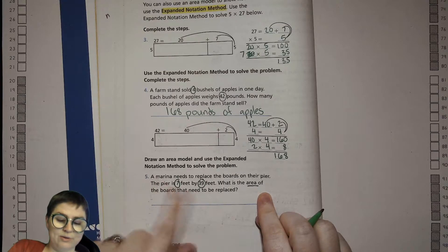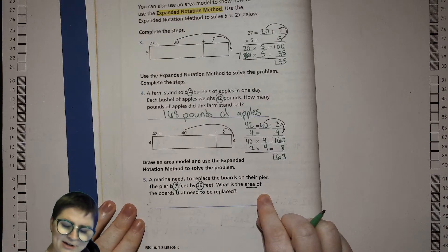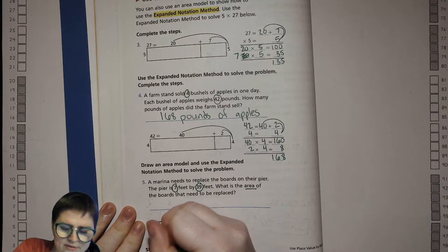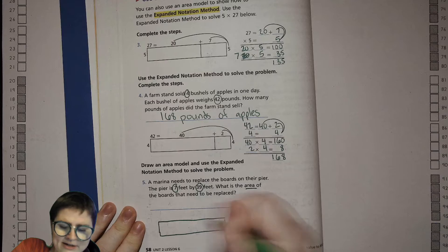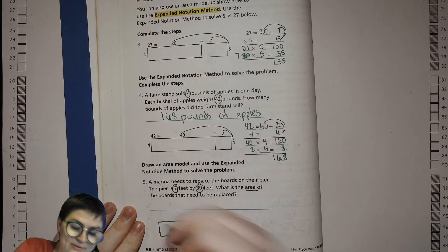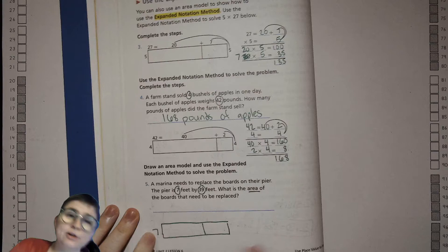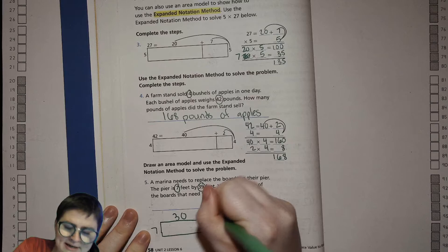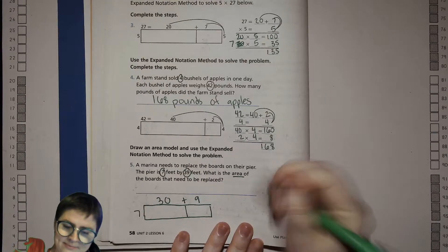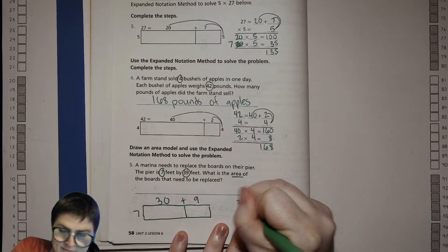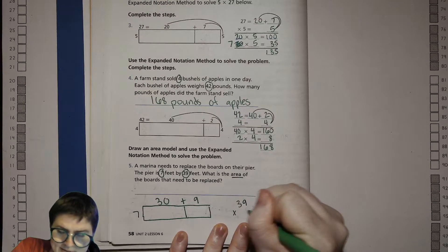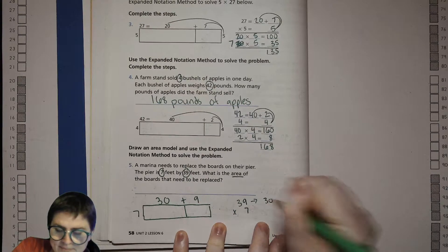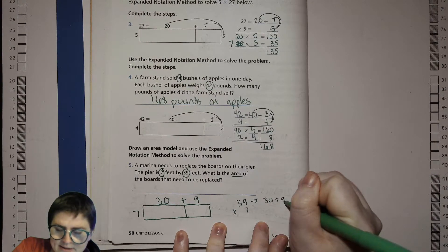I'm going to draw a rectangle. Here we can make it a little bit smaller because we're not writing anything inside. So our single digit will go right there. Our double digit we're breaking by place value: 30 plus 9 equals 39. Then we'll write 39 times 7, and we're going to turn 39 into 30 plus 9.